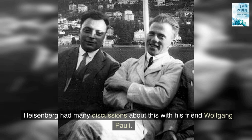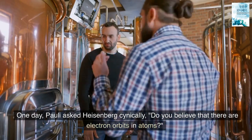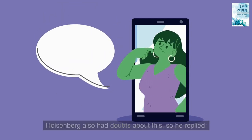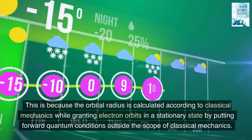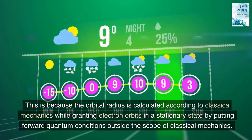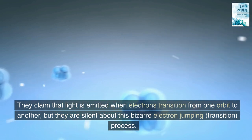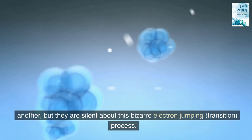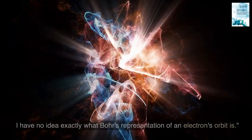Heisenberg had many discussions about this with his friend Wolfgang Pauli. One day, Pauli asked Heisenberg cynically, do you believe that there are electron orbits in atoms? Heisenberg also had doubts about this, so he replied, the Bohr theory is full of doubts. This is because the orbital radius is calculated according to classical mechanics while granting electron orbits in a stationary state by putting forward quantum conditions outside the scope of classical mechanics. They claim that light is emitted when electrons transition from one orbit to another, but they are silent about this bizarre electron jumping, transition, process. I have no idea exactly what Bohr's representation of an electron's orbit is.